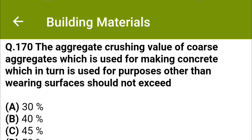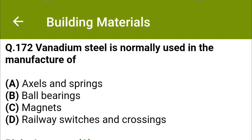Vanadium steel is normally used in the manufacture of: option A axles and springs, option B ball bearings, option C magnets, option D railway switches and crossings. The correct answer is option A: axles and springs.